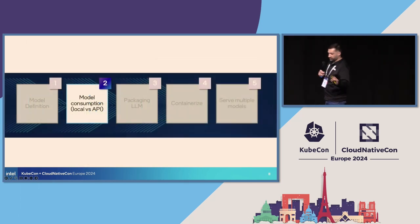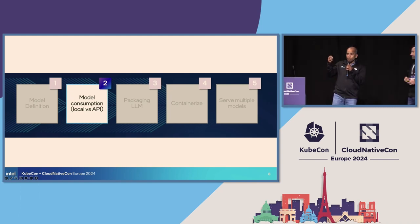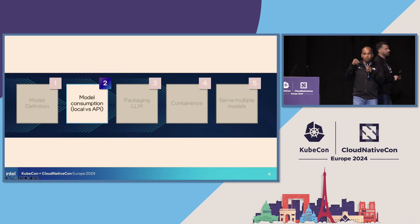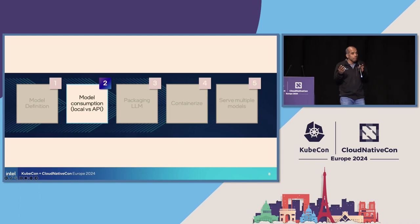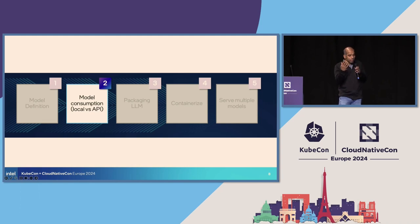Once you know the model, you need to consume it. HuggingFace, as they say, is a GitHub for LLMs. Just as when you go to GitHub and look at an open source project — you don't want to use one created three years ago, never maintained, potentially with CVEs — the same philosophy applies to HuggingFace. A model not maintained for a long time could be malicious or have vulnerabilities.